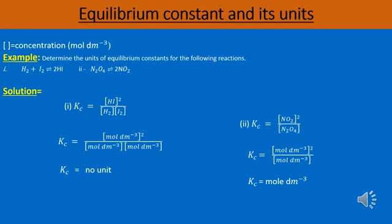In the first step we will write the equilibrium constant expression Kc, which is the ratio of concentration of products to the concentration of reactants. In the second step we will write the concentration in moles per decimeter cube within the square brackets.